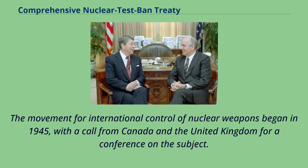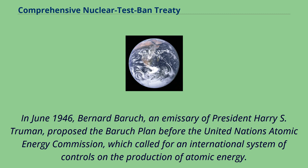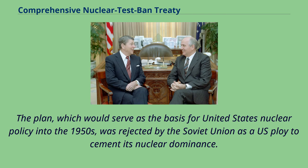The movement for international control of nuclear weapons began in 1945, with a call from Canada and the United Kingdom for a conference on the subject. In June 1946, Bernard Baruch, an emissary of President Harry S. Truman, proposed the Baruch Plan before the United Nations Atomic Energy Commission, which called for an international system of controls on the production of atomic energy. The plan, which would serve as the basis for United States nuclear policy into the 1950s, was rejected by the Soviet Union as a U.S. ploy to cement its nuclear dominance.